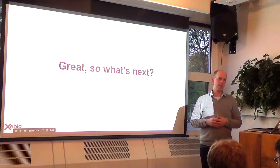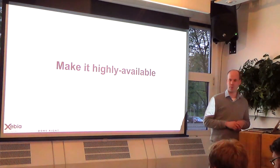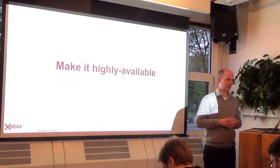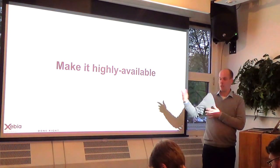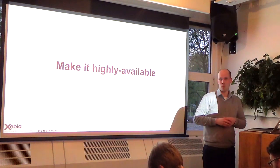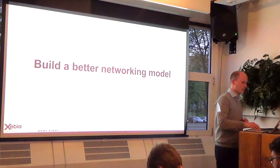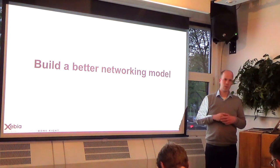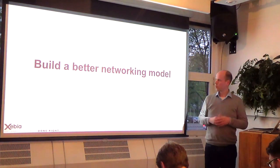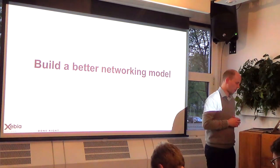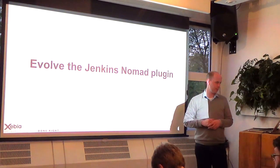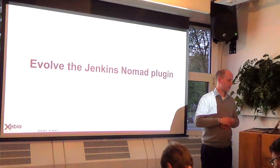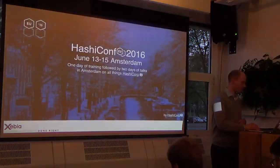So where to go next? First, make it highly available — running in one Vagrant machine is fine for demos, but for production you should use at least three servers for a highly available Nomad cluster. Maybe use a cloud setup to automatically scale worker nodes. Then build a better networking model — perhaps add load balancers for multiple component instances. And evolve the Jenkins-Nomad plugin further — it's a first version and I'd like some help on it, so whoever wants to contribute, just let me know.